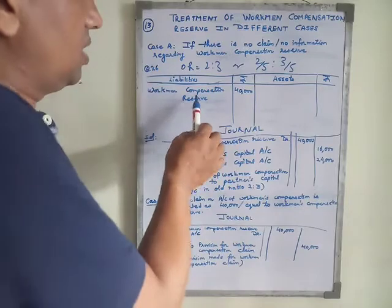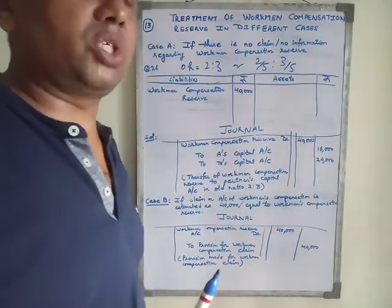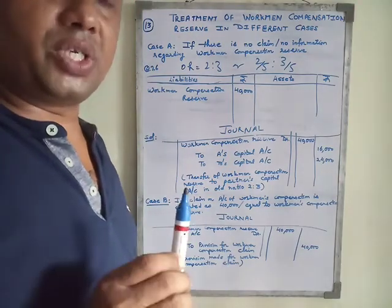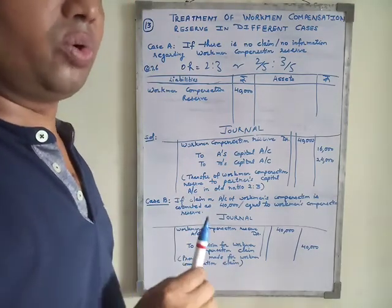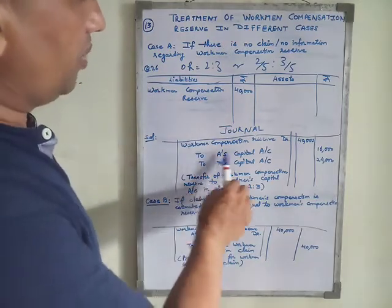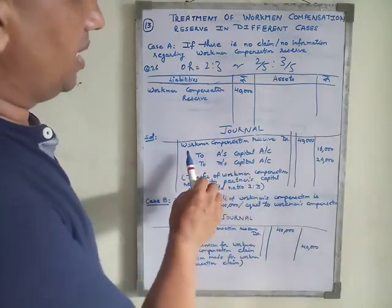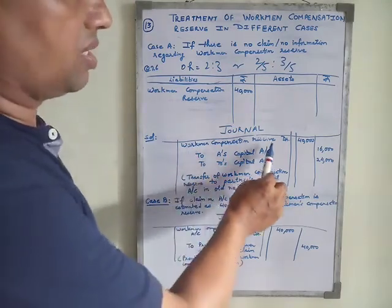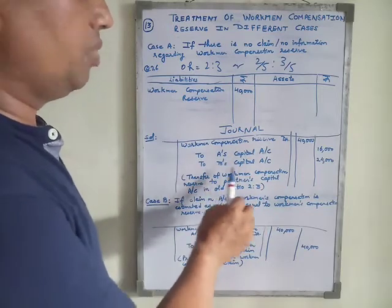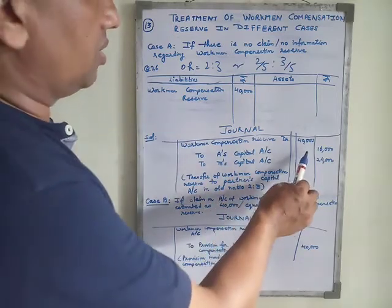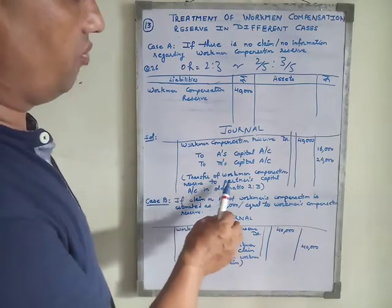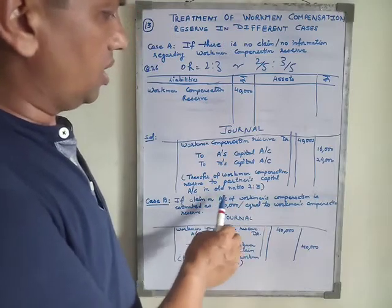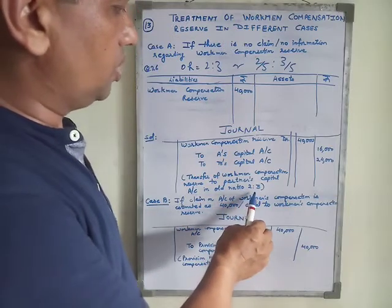If there is no information regarding workman compensation reserve, the workman compensation reserve is distributed between old partners in their old ratio. The journal entry passed is: Workman Compensation Reserve Account Dr. to A's Capital Account, to B's Capital Account — 40,000 distributed. Narration: Transfer of workman compensation reserve to partners' capital accounts in old ratio 2:3.